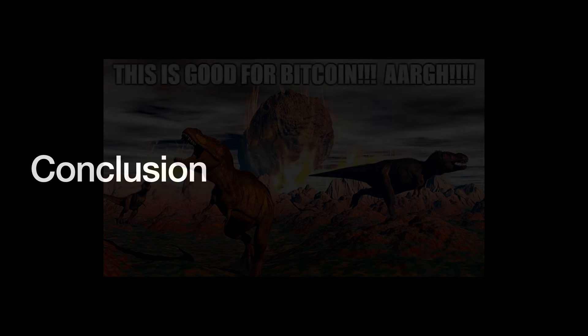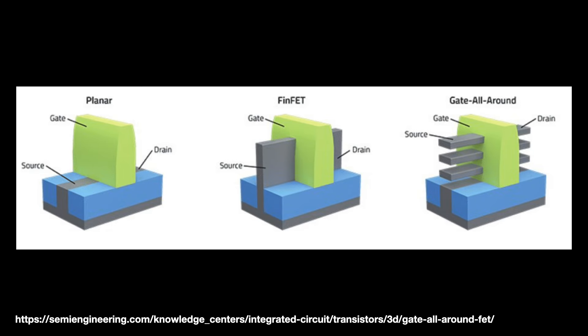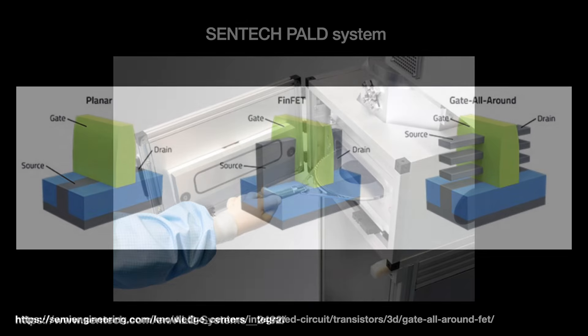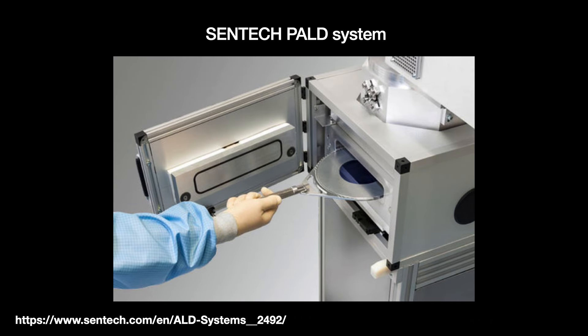Leading-edge semiconductors are getting both smaller and taller. For instance, the major foundries are moving to using gate all-around transistors, which are made up of stacked nanosheets totally surrounded by the silicon gate. On the front end of the line, these structures have complex topologies.